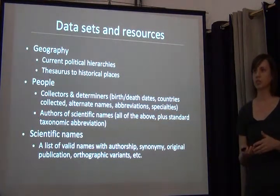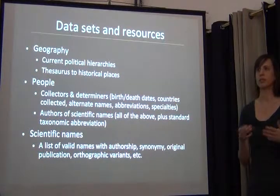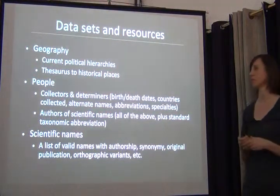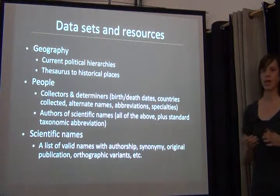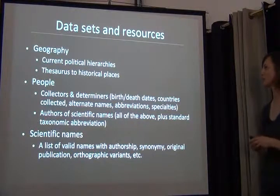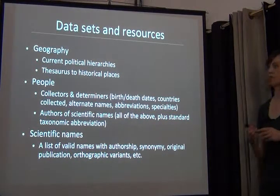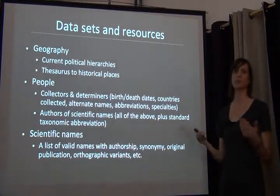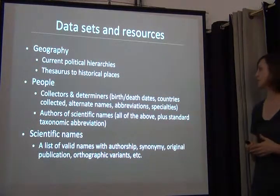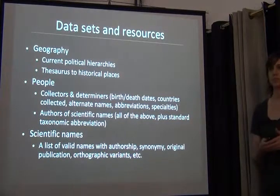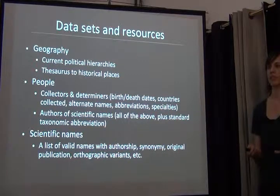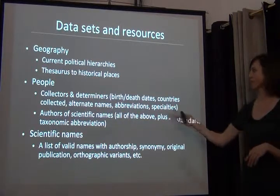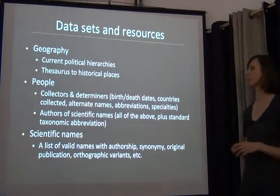You might also have a thesaurus for historical places, because a lot of older labels have information that wouldn't necessarily be standard. If you're using only standard country names, you may have labels with place names that are no longer in use. People are a lot of fun — they like to change the way they put their names on labels. Authority files for collectors, determiners, and authors should include birth dates, death dates, main collection dates, collection countries, abbreviations, and specialties, so that if you're looking at 'J. Smith' on different labels, and you have three different matches in your database, the extra information helps you choose the correct one for your specimen.